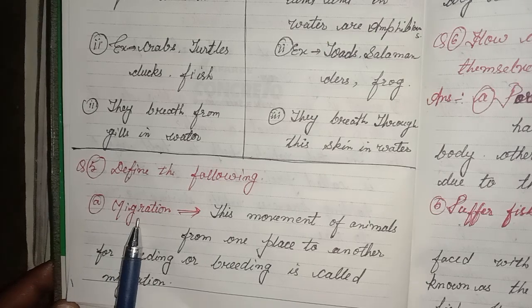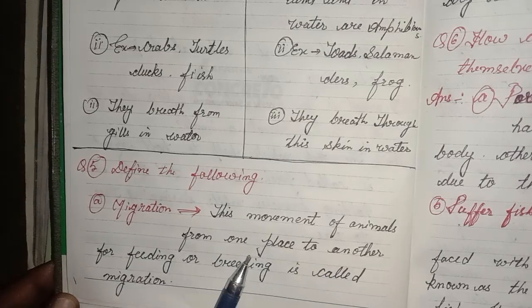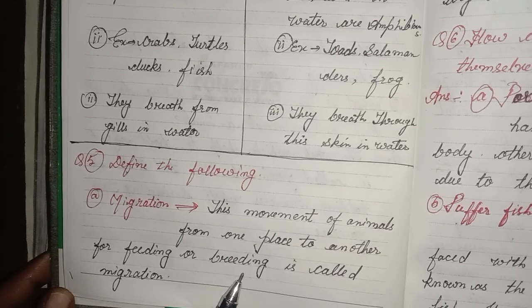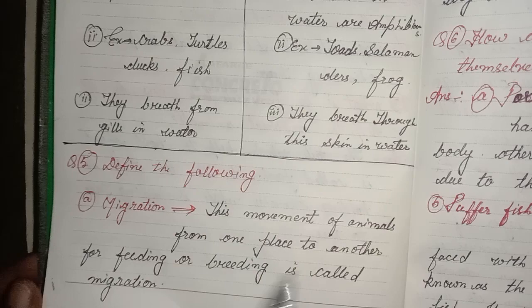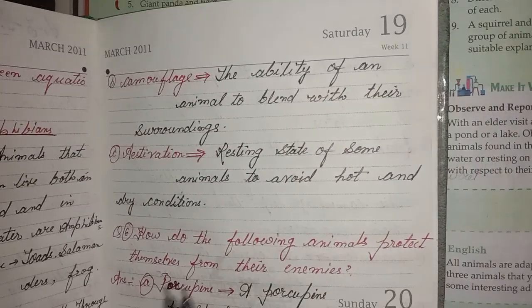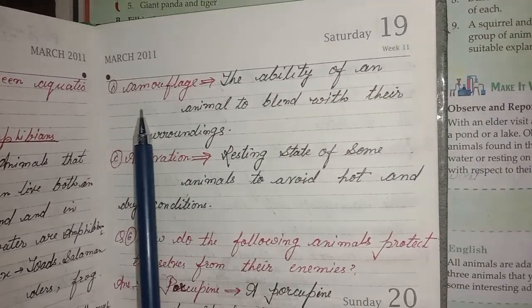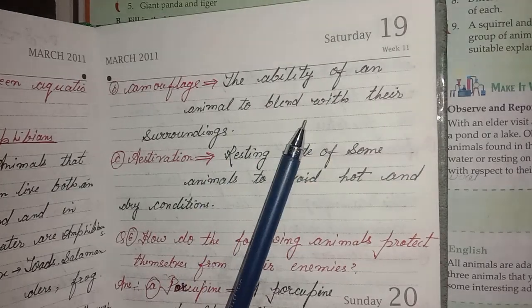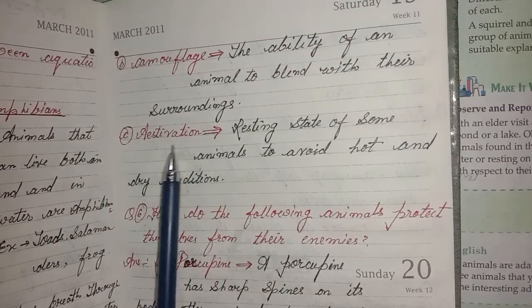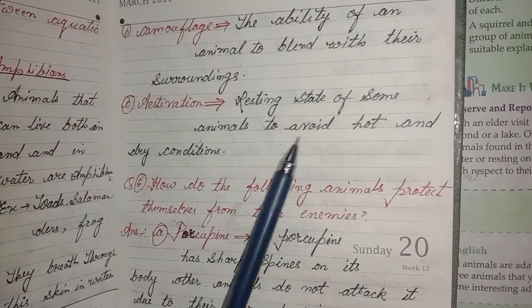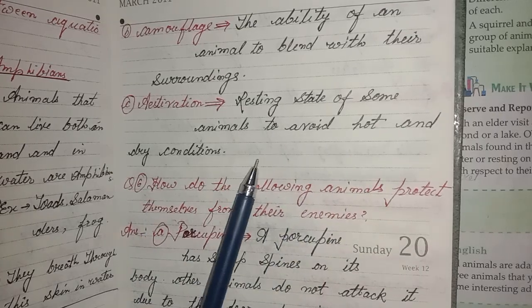Define the following. First: migration - the movement of animals from one place to another for feeding or breeding is called migration. Second: camouflage - the ability of an animal to blend with their surroundings. Third: estivation - a resting state of some animals to avoid hot and dry conditions.